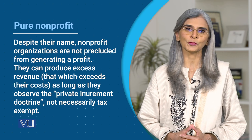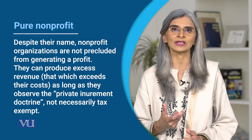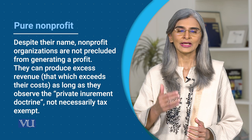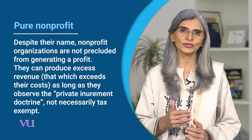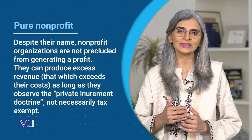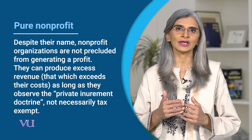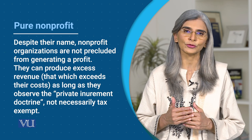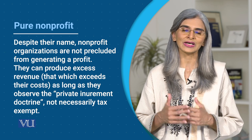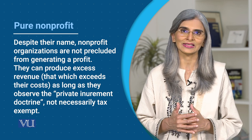दुनिया के मुख्तलिफ मुमालिक में एक कानून है जिसको private inurement का कानून कहते हैं, जिसका मतलब ये है कि organization पर restriction होती है कि वो जो excess revenues हैं, उनको owner या जिसने वो non-profit organization start की है, वो अपने ذاती मकासिद के लिए इस्तमाल नहीं कर सकता.